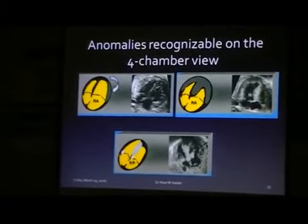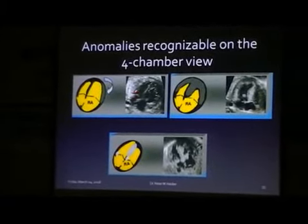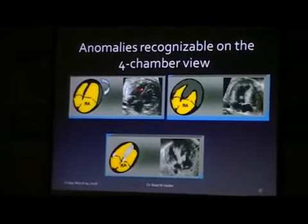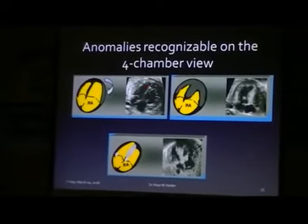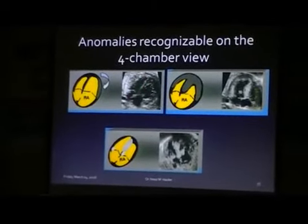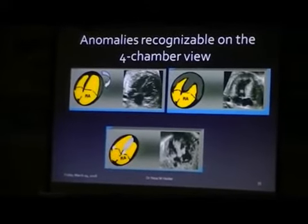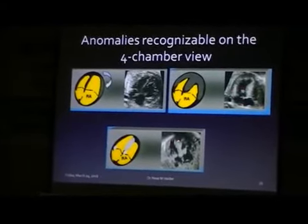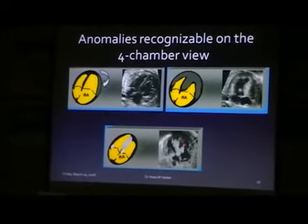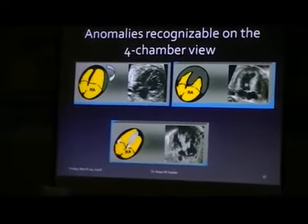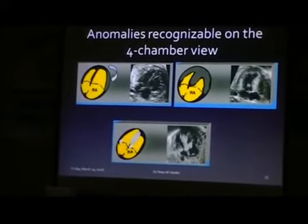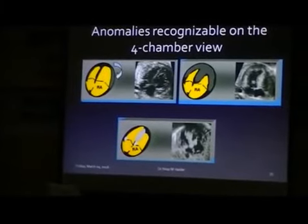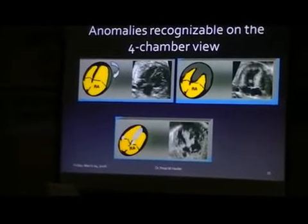Here there is disproportion of the ventricles — the left ventricle is small and the right ventricle is enlarged, and this is an indirect sign of coarctation of the aorta. And here, biventricular hypertrophy. And here there is a mass in the fetal heart, and on morning scans we can get some echogenic foci in the fetal heart, which can indicate abnormality.